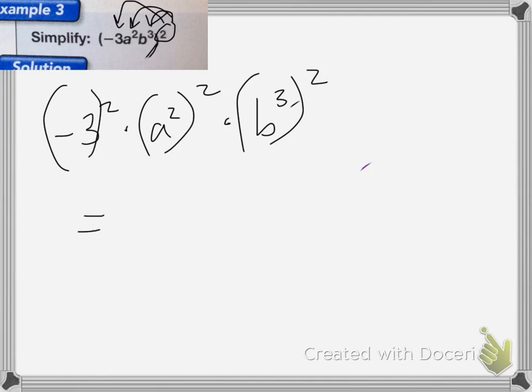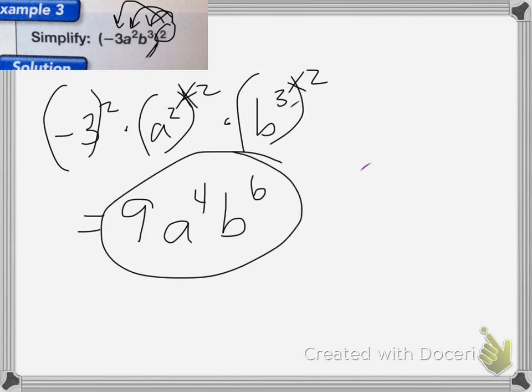So negative 3 squared is going to equal to 9, a squared squared, you're going to multiply 2 times 2 is 4, so it's going to be a to the fourth power. And then 3 times 2 is equal to 6, so it's going to be b to the sixth power. So those are the two ways you can do it. You can choose which one is easier for you. And that's it for this lesson.